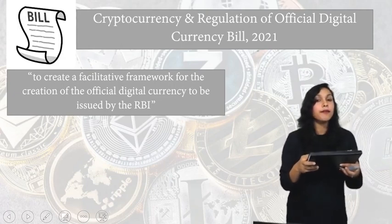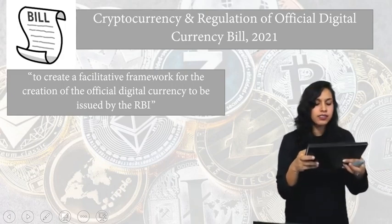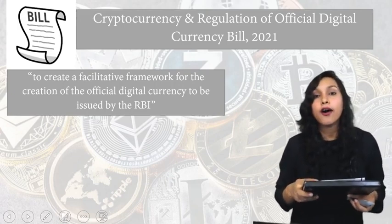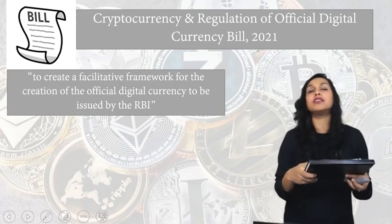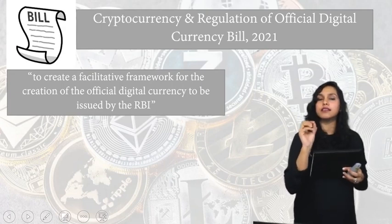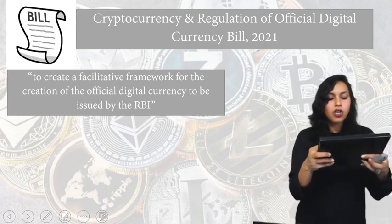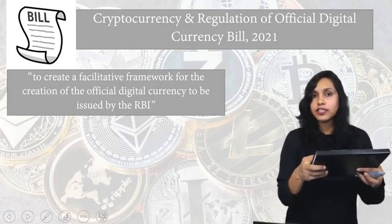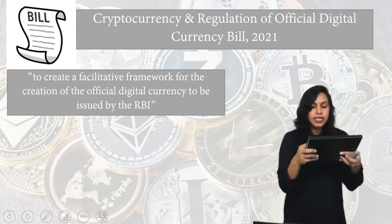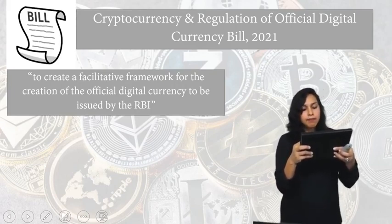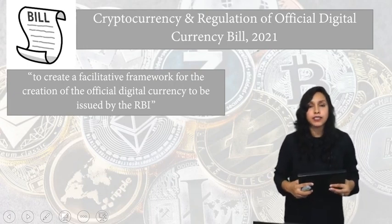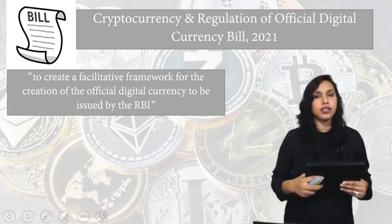Last week, RBI Governor Shaktikanta Das said the bank had serious concerns from the point of view of macroeconomic and financial stability, and that blockchain technology can thrive without cryptocurrencies. However, several reports recently claimed that the government may allow trading and investing in cryptocurrencies, but with certain restrictions. The government notes that cryptocurrencies exist on the blockchain with no single entity controlling it — it is decentralized. The decentralized nature of blockchain separates it from digital currencies under the control of a single entity. Governments can ban trading in cryptocurrencies and also ban using them for payment purposes.